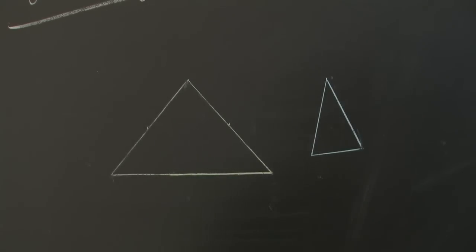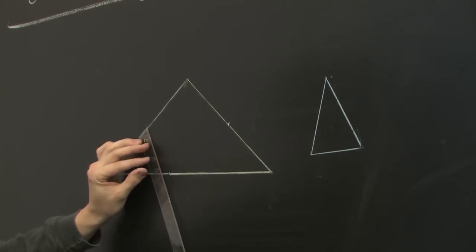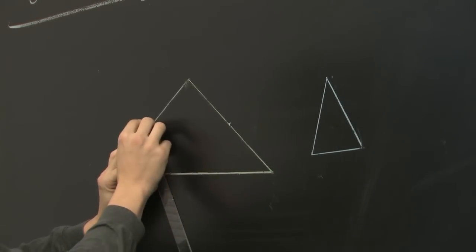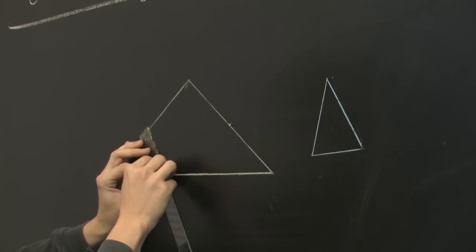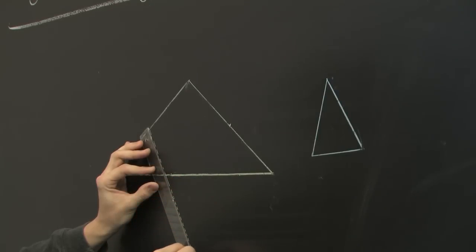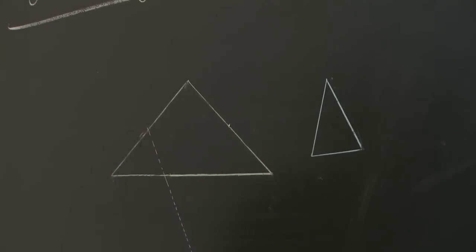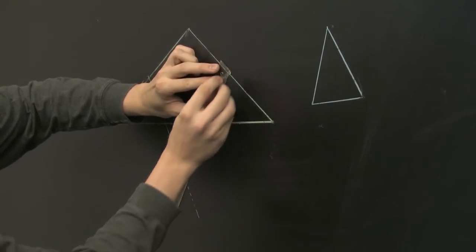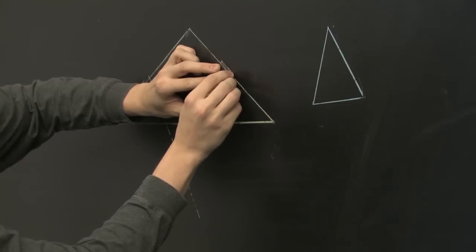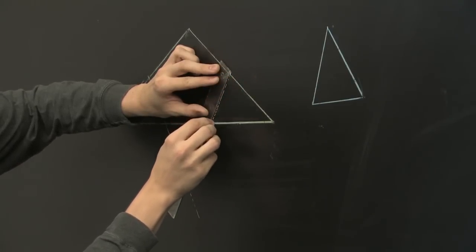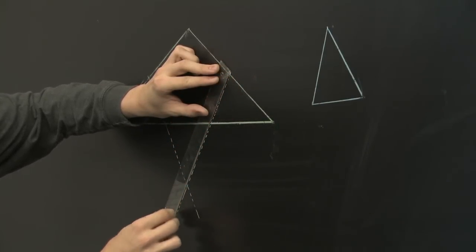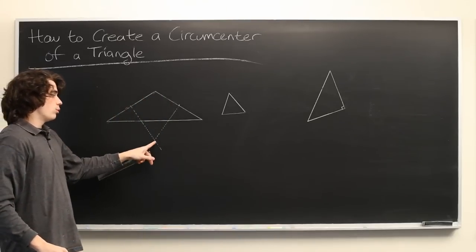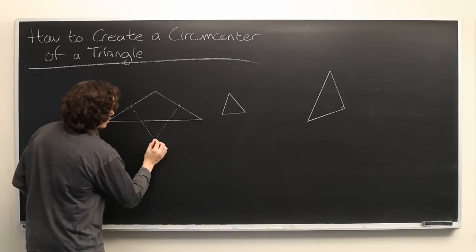What you'll want to do is form a right angle with these sides and you can just make a dashed line if you want. We'll do the same with the other one — form a right angle, draw a dashed line. And where these two lines intersect is our circumcenter.